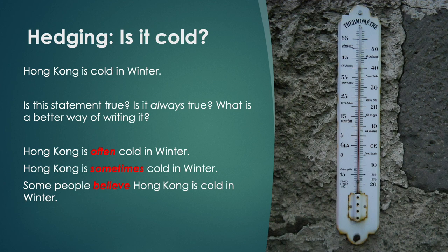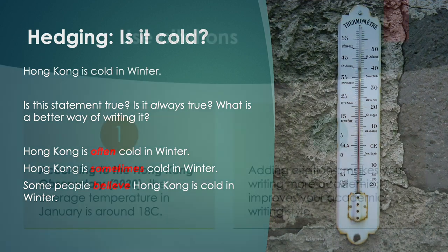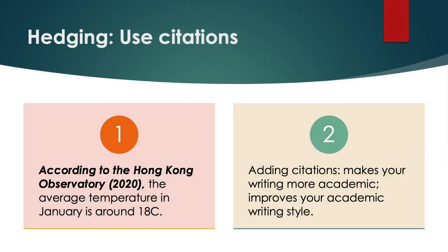So that is one way you can use hedging language in academic writing. Another way is to use citations and referencing. This follows on from the point before — transferring to a third party. However, now you are saying who the third party is.